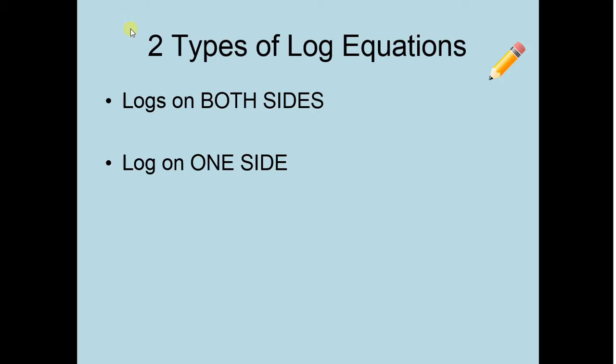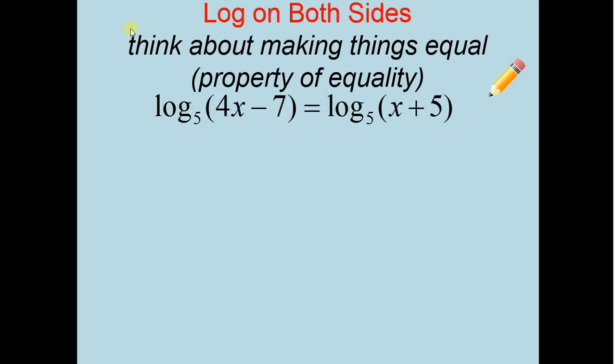There's two types of log equations that you're going to see. There's one with logs on both sides and logs on one side, kind of like we had last time. So here's an example of logs on both sides. These are the simplest ones. So what you're going to want to think about is how to make things equal. So you're going to want to see, do you have like bases on your logs? I do in fact. So what actually is cool, you can just set the insides equal to each other and solve.